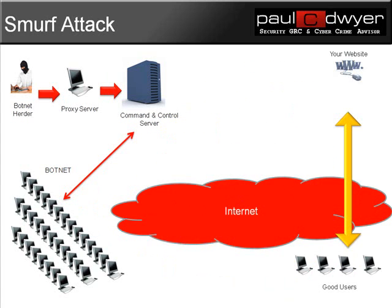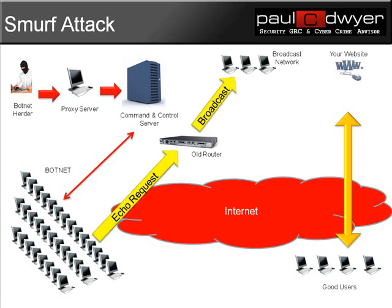Next we have an older one known as a Smurf attack. A Smurf attack is slightly different in that an echo request is sent to a router on the network, which will forward the broadcast off to the broadcast network. What they'll do is forge the reply address to be the address of your website. So when the responses come back, all the echo replies will actually be sent to your website, taking your website offline.